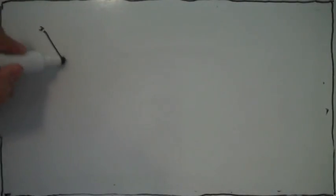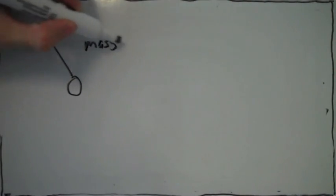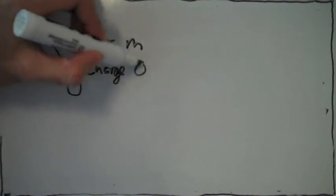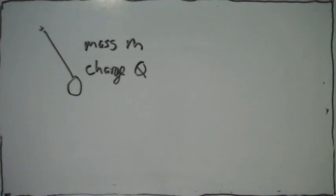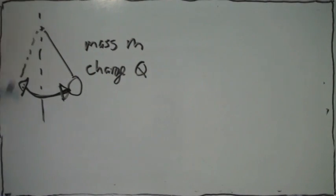In this problem there is a pendulum, basically a mass hanging from a string. The mass is m and it has some charge q. If this mass is free to oscillate back and forth as it hangs from the string, we want to find what the period of oscillation is.